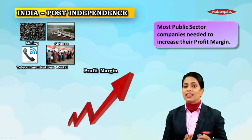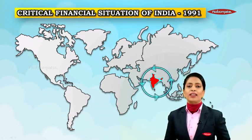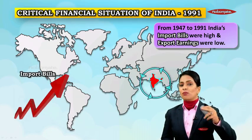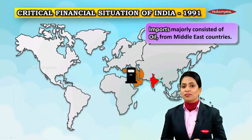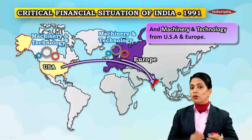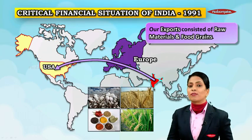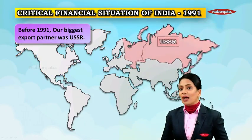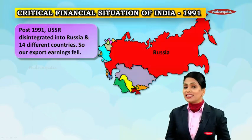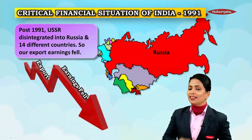The public sector, in the meantime, was in dire need of additional capital as well as modern technology. Most public sector companies needed to increase their profit margins. Then in 1991 came the critical financial situation of India. From 1947 to 1991, India's import bills were very high and our export earnings were very low. Our imports majorly consisted of oil from Middle East countries, and another big import was machinery and technology from USA and Europe. Our exports consisted of raw materials and food grains. Before 1991, our biggest export partner was USSR.